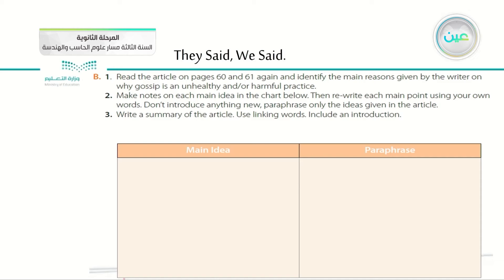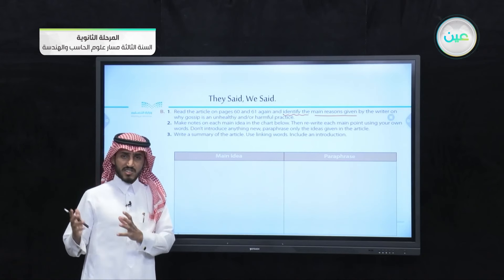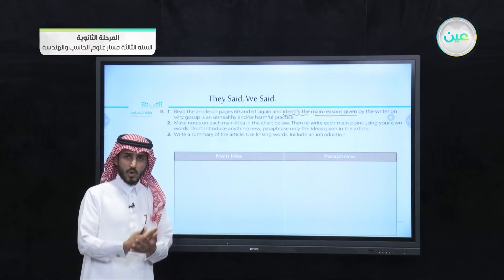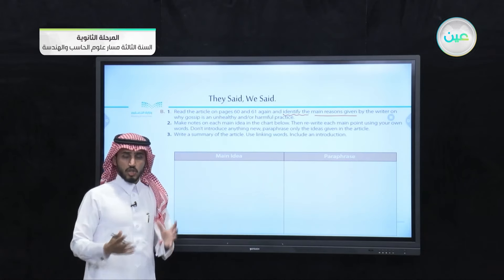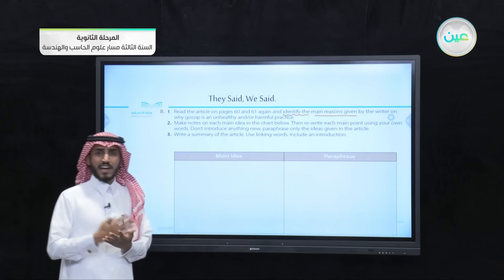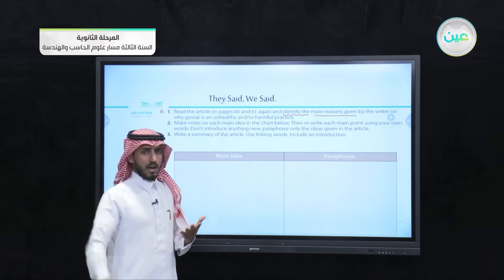After that, we go to page 63. After learning how to find the main idea, we will put what we have learned into practice. Number one: read the article on pages 60 and 61 again and identify the main reasons given by the writer on why gossip is an unhealthy and harmful practice. We are asked to identify the main reasons — go back and try to find them. Why does she hate gossiping? There are many reasons.